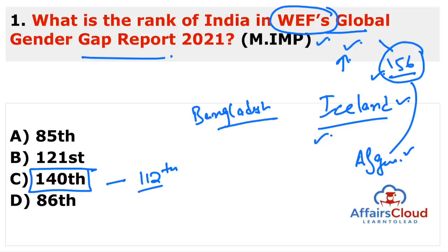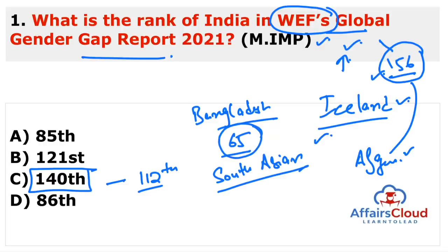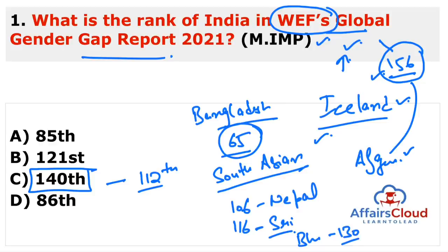Among South Asian countries, Bangladesh was the top performer with a global ranking of 65. Nepal's rank is 106, Sri Lanka is 116th, Bhutan is 130th. Afghanistan and Pakistan were the only countries behind India in the South Asian region — Afghanistan has the last rank of 156 and Pakistan has the 153rd rank. If talking about global regions, the Middle East and North Africa are the lowest performers with the largest gender gap.